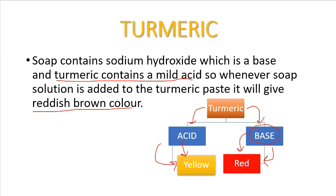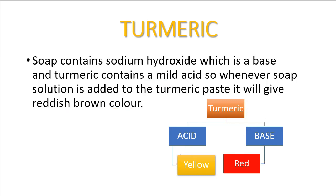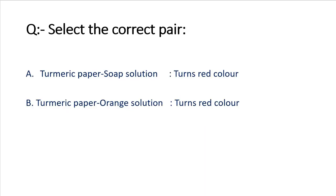Let us check what you have learned about turmeric paper by answering a simple question: which pair is correct? The answer is the first option — turmeric paper in a soap solution turns red, as we have discussed.